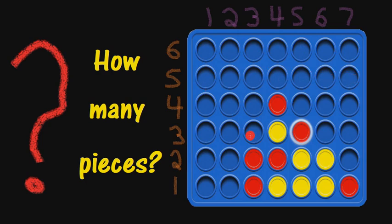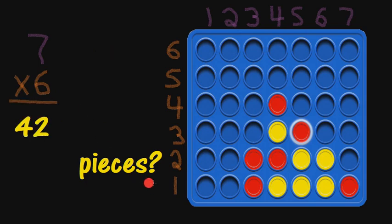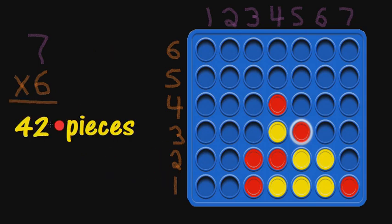So what we're going to do next is multiply. We're going to take seven, multiply that times six, and that's going to give us the number of pieces. So seven multiplied by six is 42. There are 42 pieces on this board.